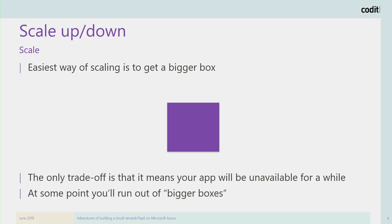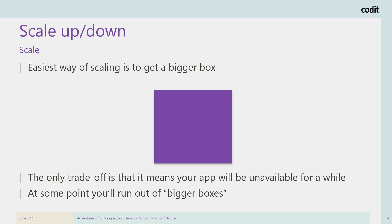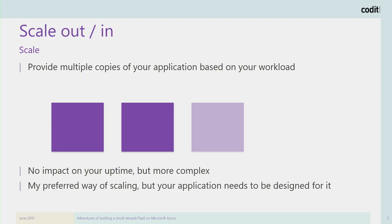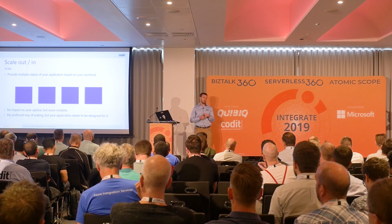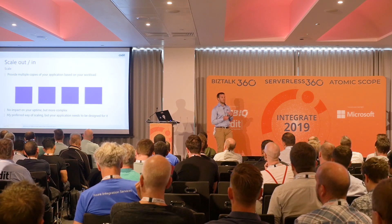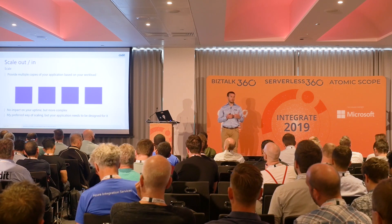Let's start with scaling. Scaling is very important. There are two types: you can scale up or down, where you basically get a bigger box. When you reach the limits, you scale the box up — you have a small amount of downtime but you can keep moving. Then you have scale out, which is more frequently used because you don't have any downtime — you just add more instances.